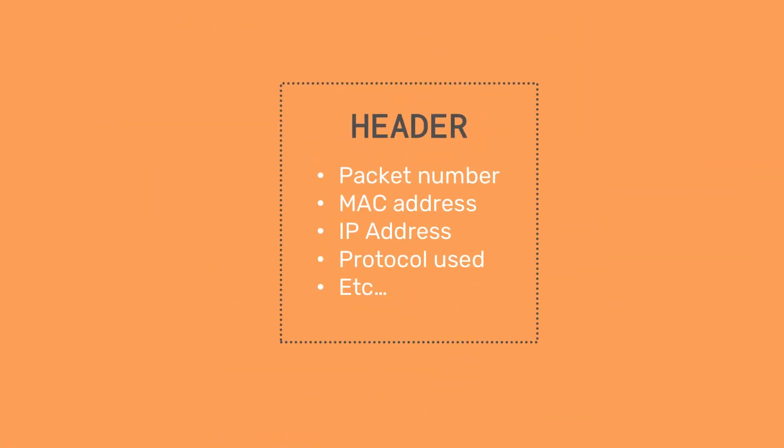The header contains information about the data. It'll have the packet number, which is the number of the packet in relation to the sequence of packets. This is needed so that the data can be reassembled in order — a packet number of zero would relate to the first packet in the sequence. It will contain IP addresses and MAC addresses, with addresses of each for both the receiving and sending device. Other important data the header contains are details of the protocol being used to transmit it.